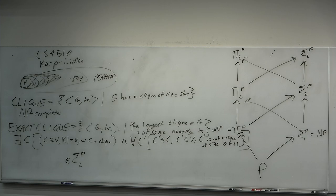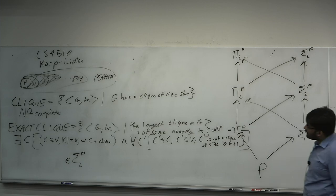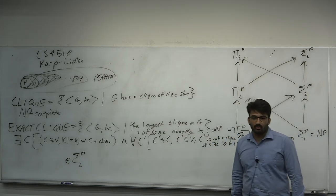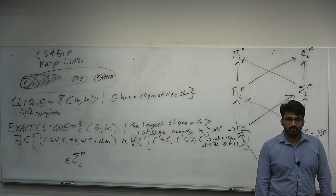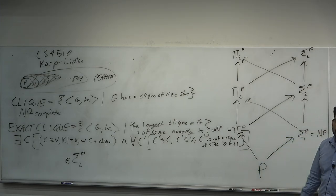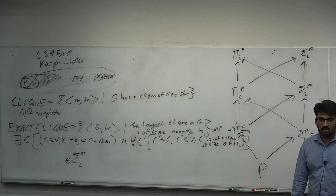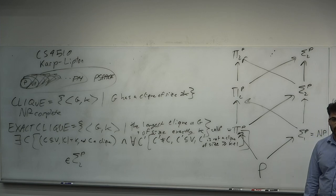You could come up with a contrived problem requiring ten quantifiers, but Exact Clique is an example of a natural problem that requires at least two. The condition of exactness is what we need the second quantifier for — all other subsets that are not equal to C are not cliques of size K+1.